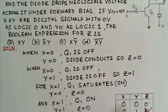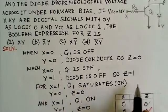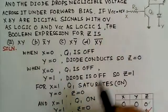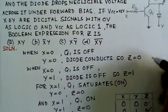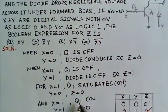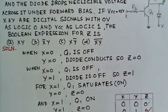Now for X is equal to 1, the Q1 would be in saturation and Q1 would be on. But Y is 0, Y is 0 means diode would be conducting. It will be Z is equal to 0. The output will be Z is equal to 0.